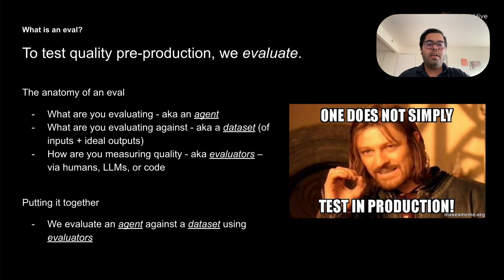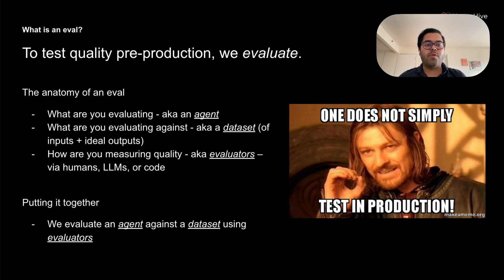First, we need an agent — basically whatever you are evaluating. It could be an end-to-end agent, a small function within an agent, or just your retrieval pipeline. An agent itself could be a customer service chatbot, or a Q&A agent parsing through legal contracts. Each of these has its own unique requirements and challenges. For instance, if you're building a document Q&A system, it needs to not just be accurate, but also compliant with regulations — like financial Q&A — and able to explain its reasoning with nuance around financial accounting standards. Your evaluation needs to account for all these different aspects.